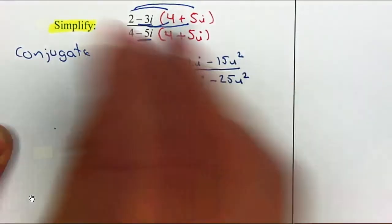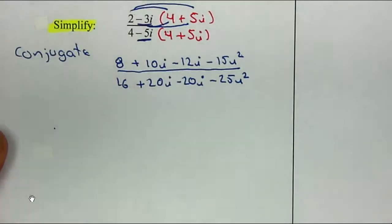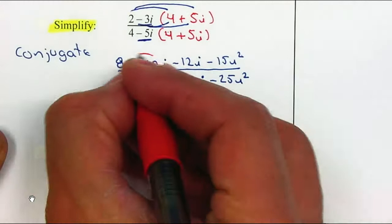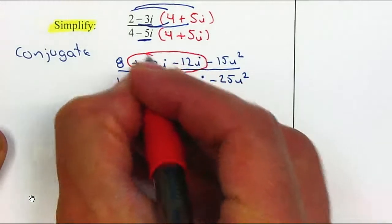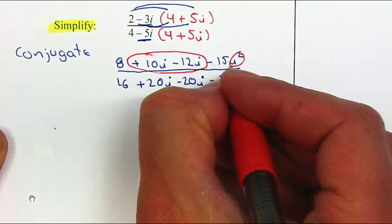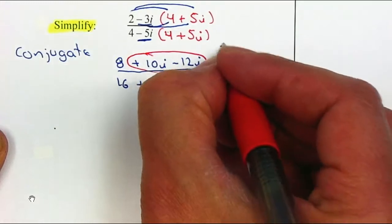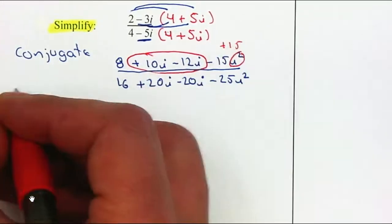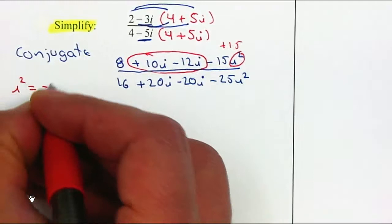Let's simplify the numerator first. We're going to combine like terms. Now, i² is negative 1. So negative 15i² times negative 1 is positive 15. Remember, i² equals negative 1.